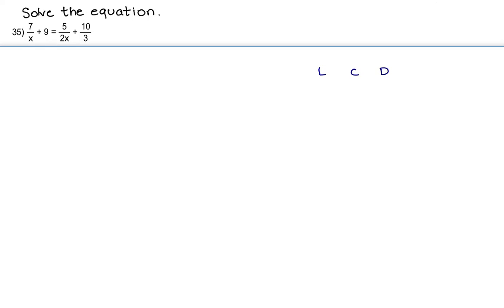So the LCD is going to be a term that we're going to distribute into the whole equation and it's going to get rid of our fractions. To find the LCD we're going to take into account all of the factors in the denominator.